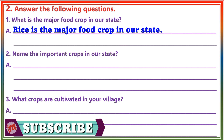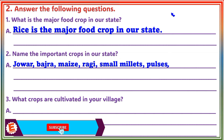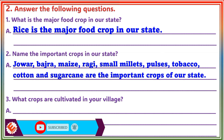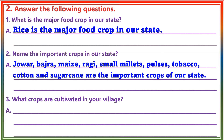Question 2: Name the important crops in our state. Answer: Jowar, Bajra, Maj, Raji, Small Millets, Pulses, Tobacco, Cotton, and Sugarcane are the important crops of our state.